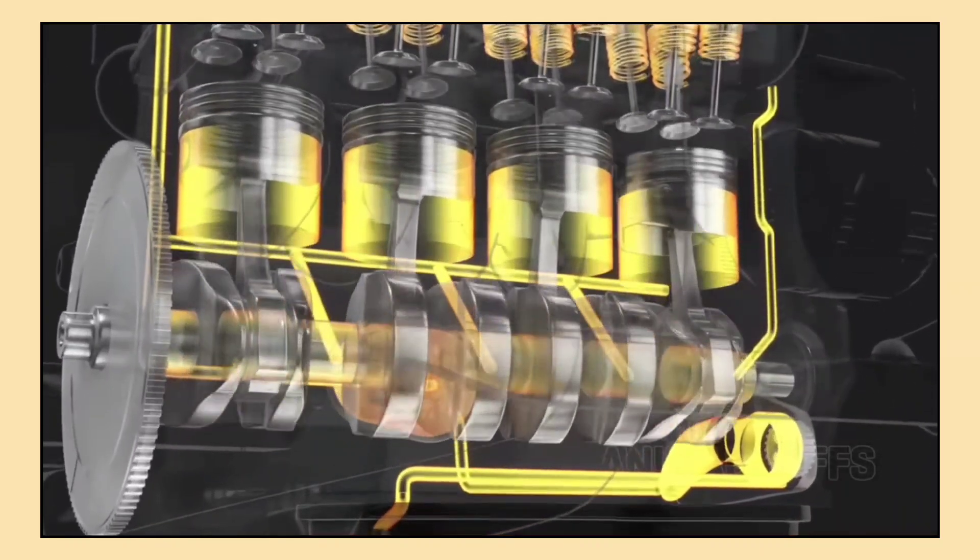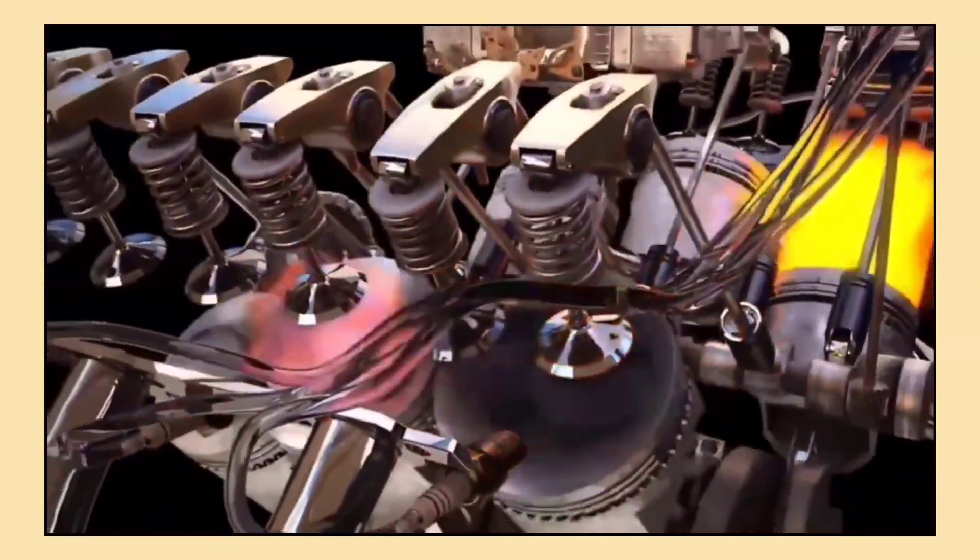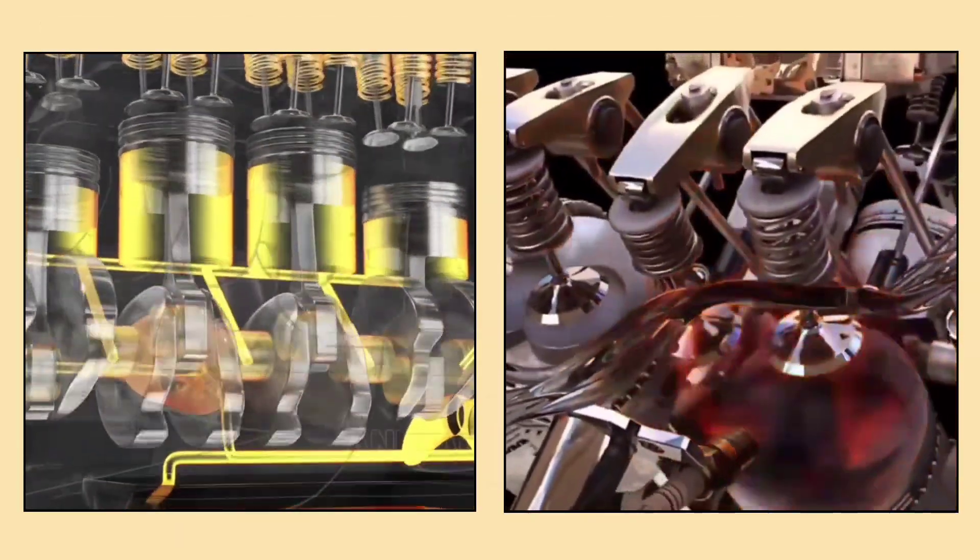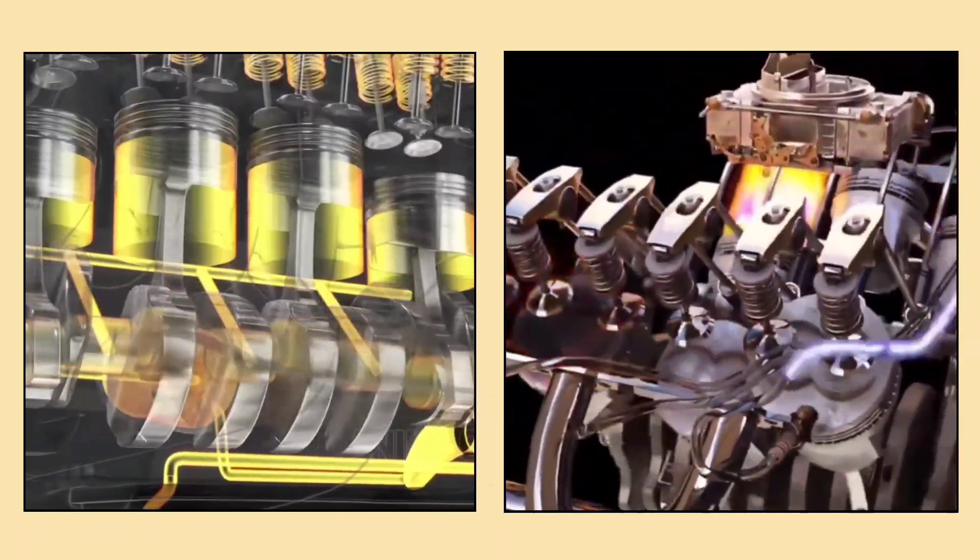Car engines come in different configurations. You may have heard of inline engines where all cylinders are in a row, or V engines where cylinders are in two banks. Each configuration affects how the engine runs, how smooth it is, and how much power it can make.